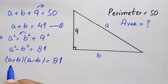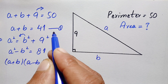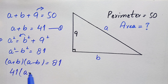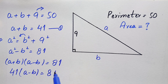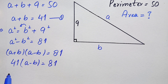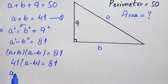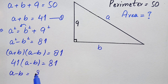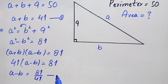We have the value of A plus B from equation number one, which is 6. So this becomes 6 times A minus B equals 81. Dividing both sides by 6, we get A minus B equals 81 divided by 6. Let us suppose this is equation number two.